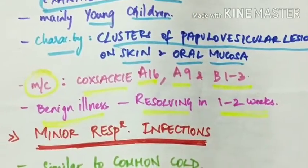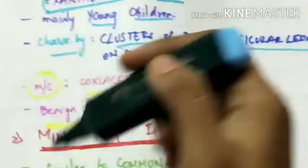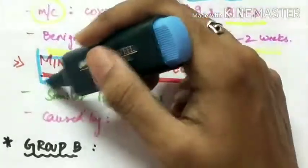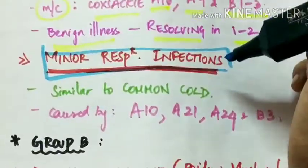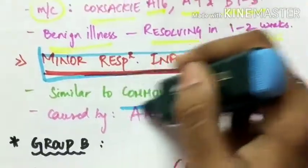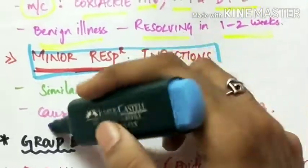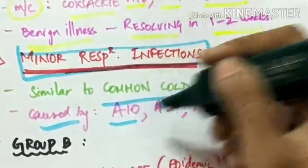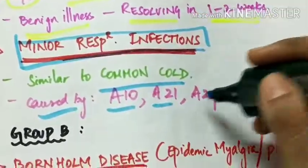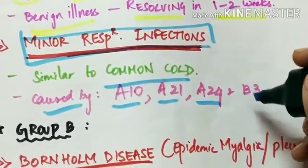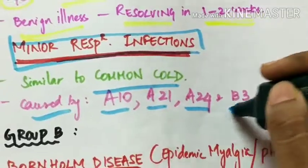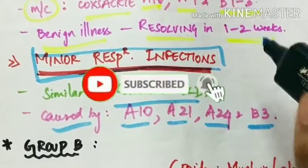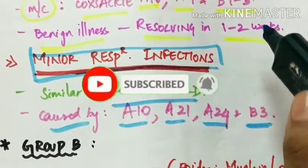Coxsackie group A viruses also cause minor respiratory infections similar to the common cold, caused by types A10, A21, A24, and B3.